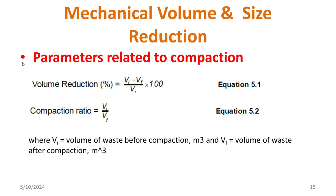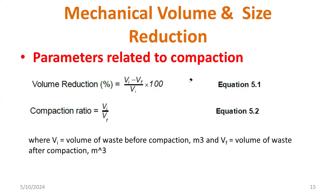There are different parameters to measure compaction. One is volume reduction — measure the volume of waste before compaction and after compaction, then take the ratio of the two. Volume reduction should be as high as possible. Compaction ratio is the volume of waste before compaction divided by the volume after compaction, and the value of compaction ratio should be less — that is desirable.